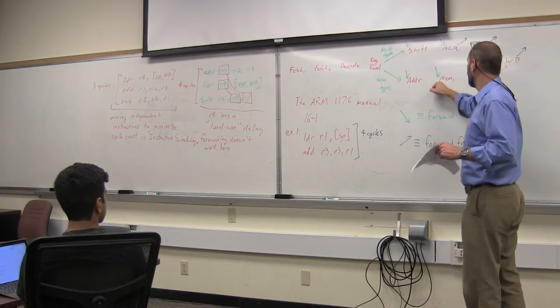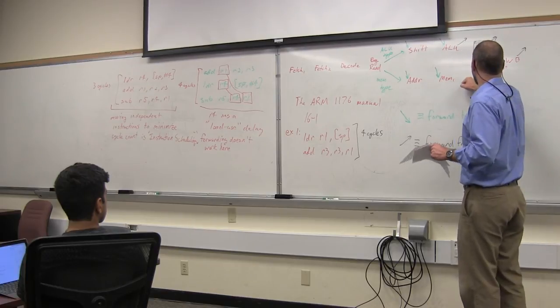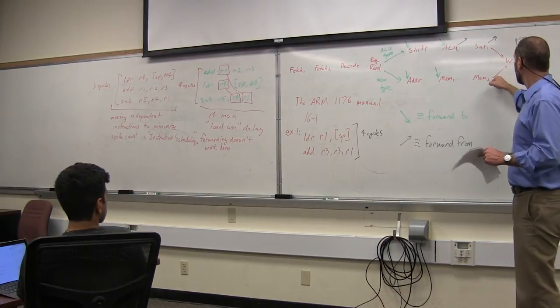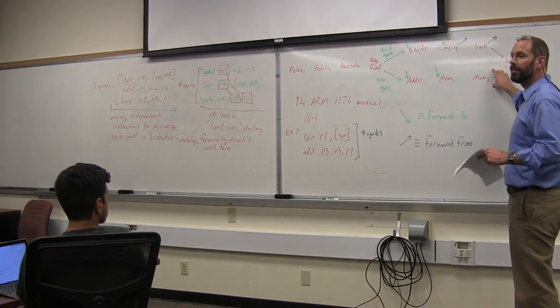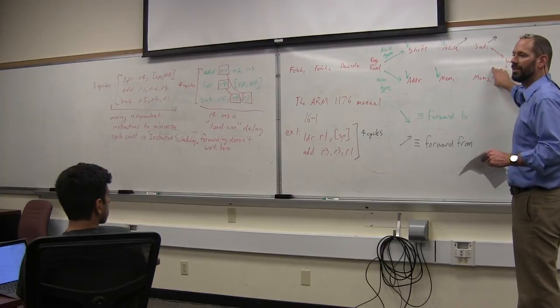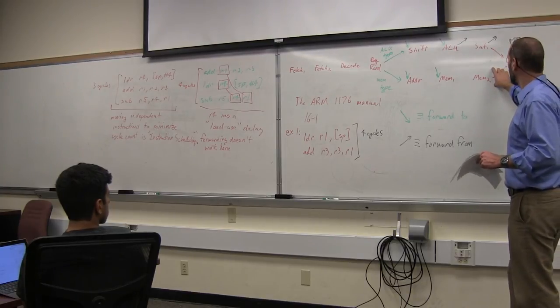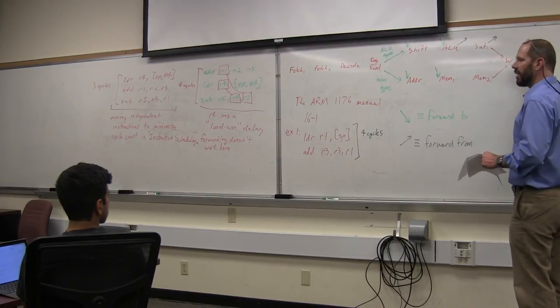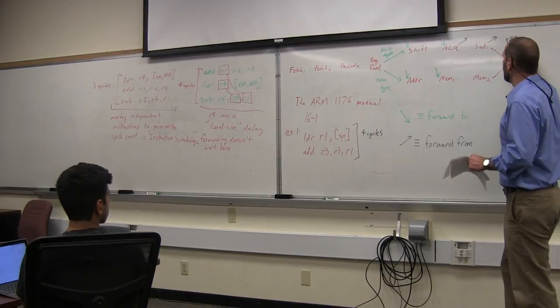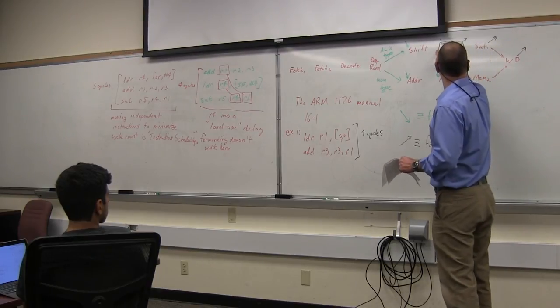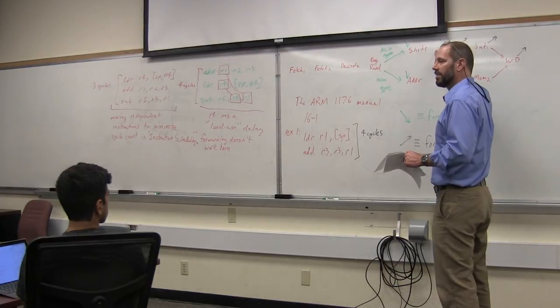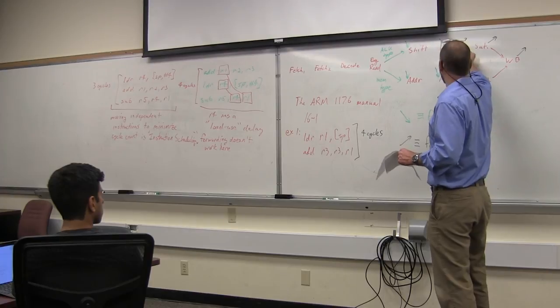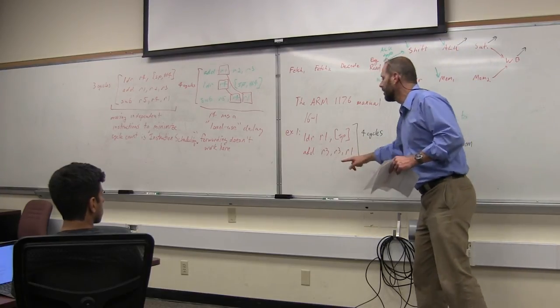So we move forward. We move the load forward. It takes one cycle to get to here. It takes another cycle to get to here. At this point now, we have the result, but there's no forwarding here. So one, two, three. Now we can forward it. Now the add has been sitting in this ALU stage waiting for its inputs. It takes one more cycle and now R3, the sum of the add instruction, is available.